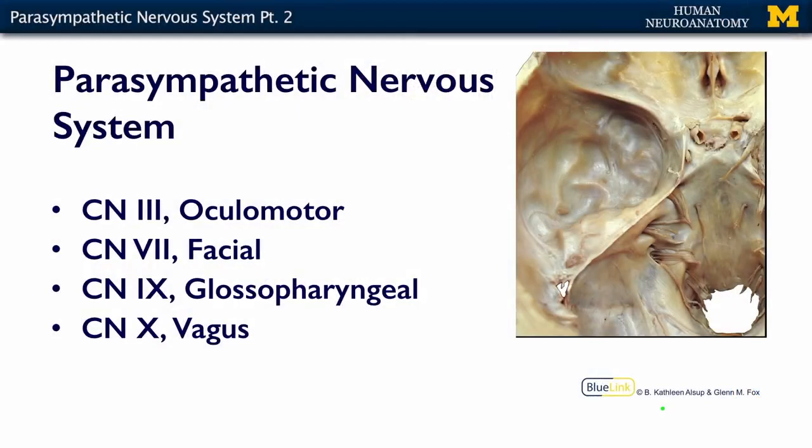The cranial portion of the parasympathetic nervous system is carried by four nerves: the oculomotor, which is cranial nerve 3; the facial, which is cranial nerve 7; the glossopharyngeal, which is cranial nerve 9; and the vagus, which is cranial nerve 10. This comprises the cranial portion of the craniosacral parasympathetic nervous system.